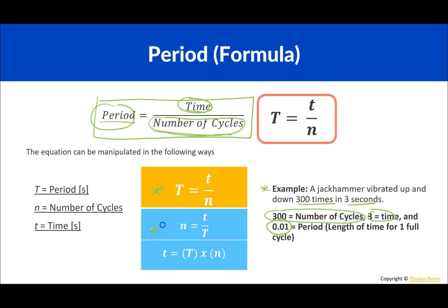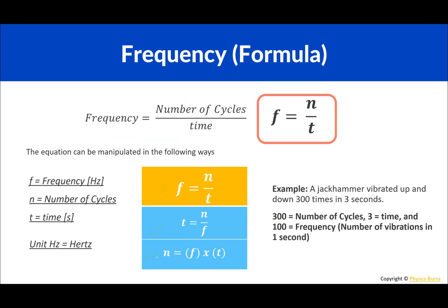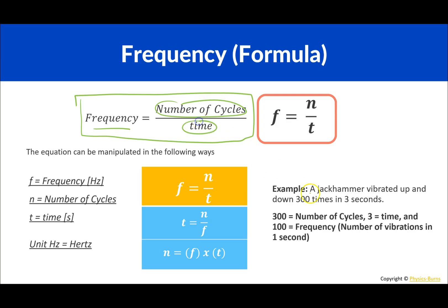That's the main formula and how we can manipulate it. Frequency is similar but pretty much the opposite — what we call the inverse. Frequency is how many times something happens in one second, so frequency equals the number of cycles divided by how long that took. Same example: a jackhammer vibrates up and down 300 times in three seconds gives us 100 hertz. That means in one second it vibrated up and down 100 times. Frequency is measured in hertz.